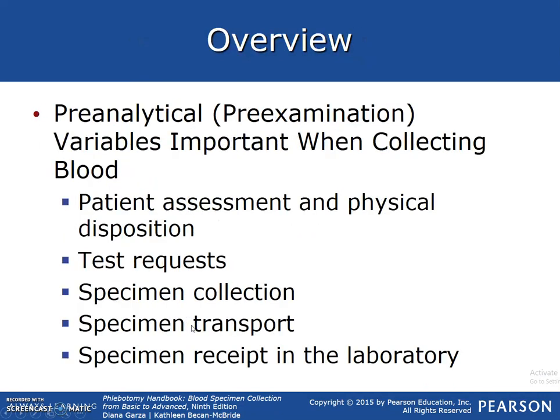An overview. Pre-analytical, pre-examination variables are important when collecting blood: patient assessment and physical disposition. When the patient comes in, we're going to assess the patient. Can we use either arm for blood collection? Do they have any history of fainting? Are they able to make a fist for us? The test requested would be the actual test — an example would be a CBC. Specimen collection, specimen transport, and specimen receipt in the laboratory.